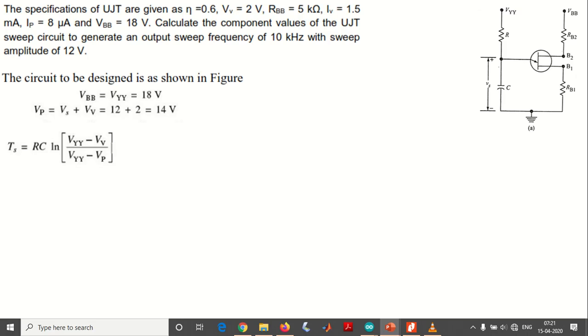Now the sweep time TS equals RC natural log of VYY minus VV by VYY minus VB, as we have already discussed this formula. VYY is 18 volts, VV is 2 volts, and VP equals 14 volts. Substituting all these values: RC natural log of 18 minus 2 by 18 minus 14, which results in RC natural log of 16 by 4, which is 4, and equals 1.386 RC. We don't know the values of RC yet.